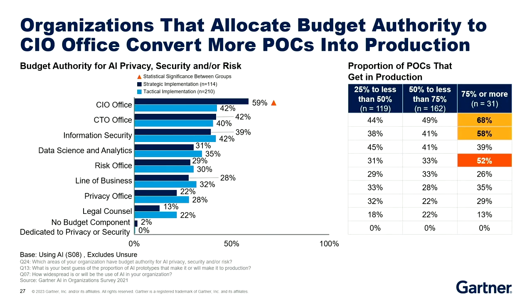You also need to figure out where to allocate the budget. We found that when the budget is allocated to the CIO office, more projects move into production — then the CTO, then the CISO. So you set up a task force, give the budget to the right party — and in most cases that will be the CIO. We're updating this research as we speak.